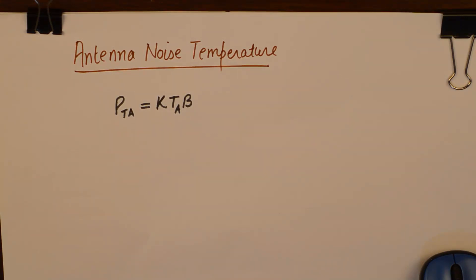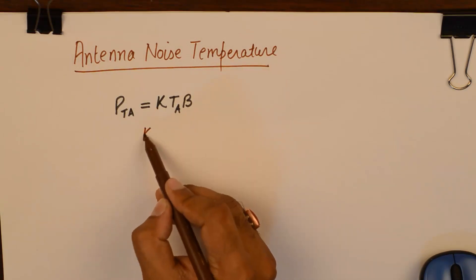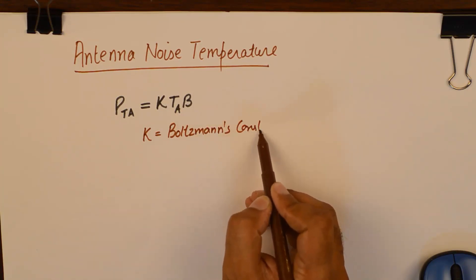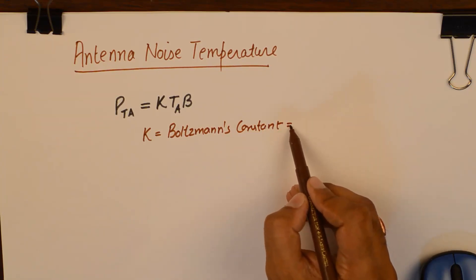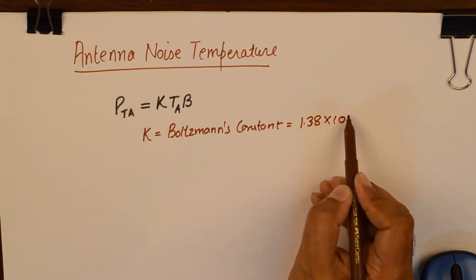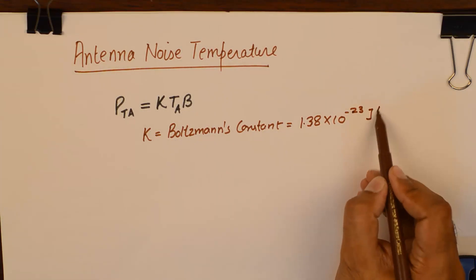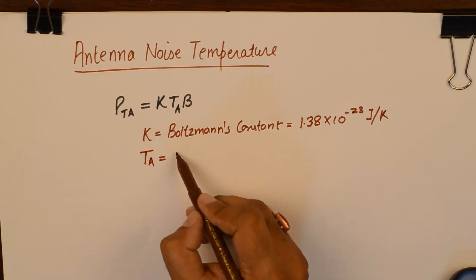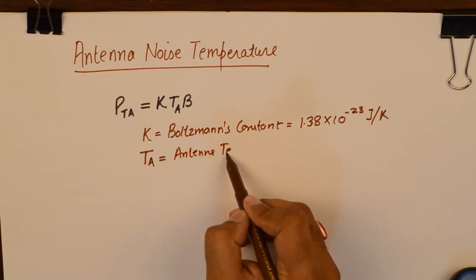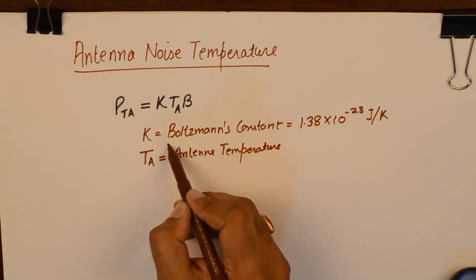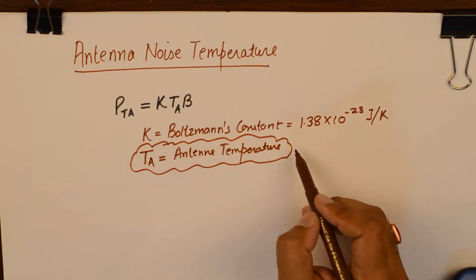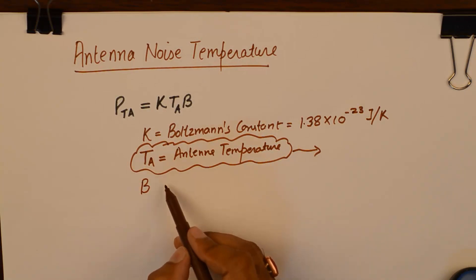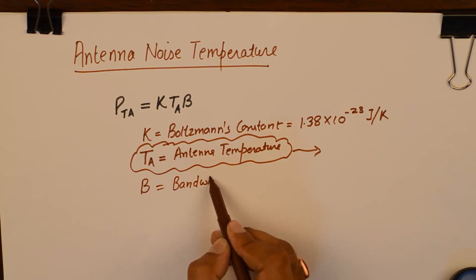Over here if you look at the noise power of antenna, K is the Boltzmann constant, and the value of which is 1.38 into 10 raised to the power minus 23 joules per kelvin. Now TA is antenna temperature. And if we segregate our attention towards this quantity, leaving aside K and B is going to be the bandwidth.